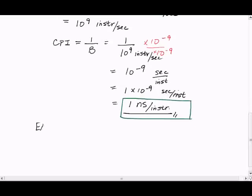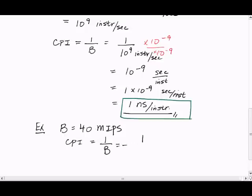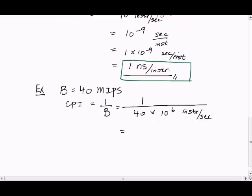Let's do our third example. Let's suppose bandwidth is 40 MIPS. So what is the CPI? CPI is 1 over B: 1 over 40 times 10 to the 6. This is simplified as 1 over 4 times 10 to the 7 seconds per instruction.